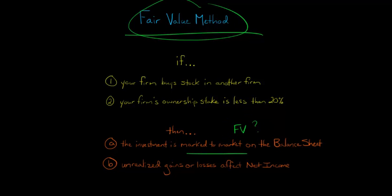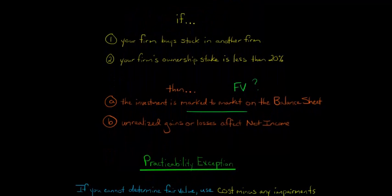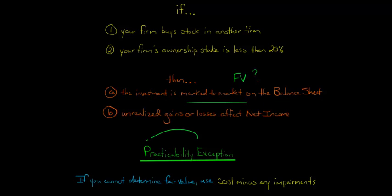So we have this exception. It's called the practicability exception. And the practicability exception basically says, look, if you can't determine the fair value, if it's just really difficult and it's just very subjective, there's no quoted price or anything like that, then you account for the investment at cost minus any impairments.